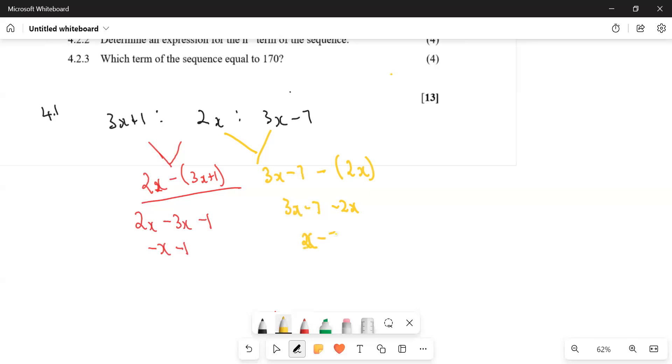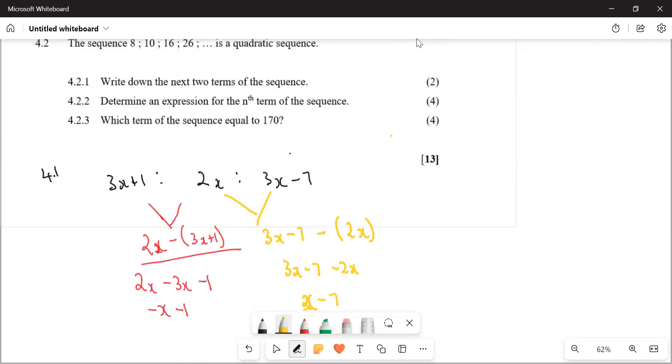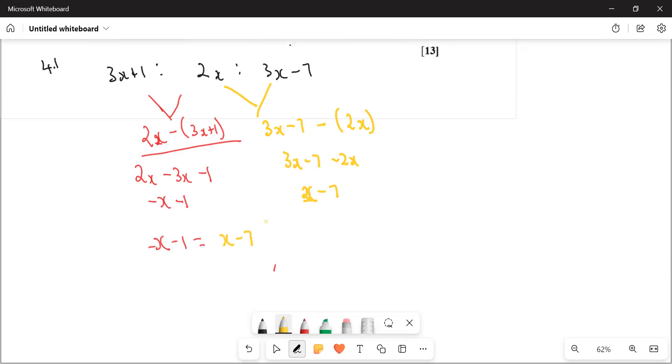So they say calculate x. What are you going to do here? Because they said it's a linear pattern, what should you do? Equate them. The first difference is equal, so we'll say minus x minus 1 is going to be equal to x minus 7.